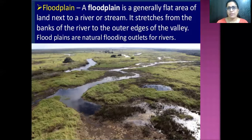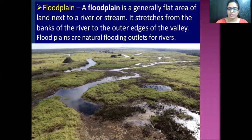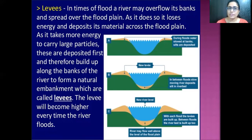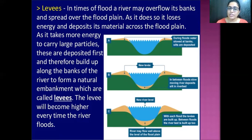The third is the floodplain. A floodplain is normally a flat area of land very next to a river or stream, stretching from the banks of the river to the outer edges of the valley. Floodplains are natural flooding outlets for rivers. In times of flood, a river may overflow its banks, loses energy, and deposits its material across the floodplain. Large particles are deposited first and build up along the bank to form natural embankments called levees, which grow higher every time the river floods.